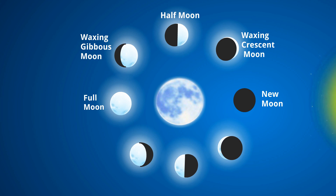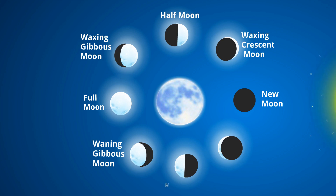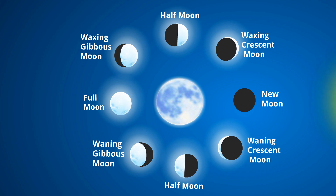A full moon is when we can see the entire lit portion of the moon. A waning gibbous moon occurs when more than half of the lit portion of the moon can be seen. The last quarter moon is when half of the lit portion of the moon is visible. A waning crescent moon is when the moon looks like a crescent and the crescent decreases.